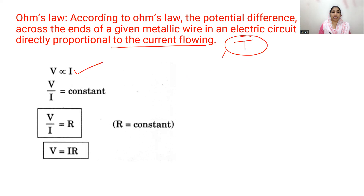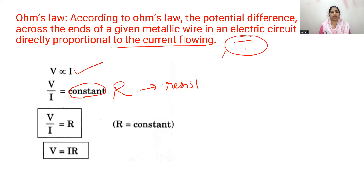V is proportional to I, or V by I equals a constant R. Resistance is the ability or property of a conductor which regulates the amount of current flowing through it.